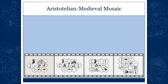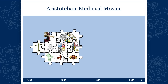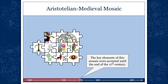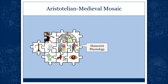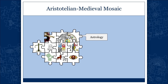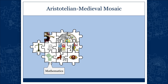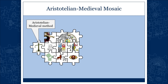So what was that mosaic? The key elements of this mosaic were accepted until the end of the 17th century. In the middle we have natural philosophy — physics. Then there's humoral physiology, astrology, cosmology, theology, metaphysics, mathematics, natural history, optics, and finally the grand Aristotelian medieval methods. I'm going to start from Aristotelian physics. The four elements: air, fire, earth, water.